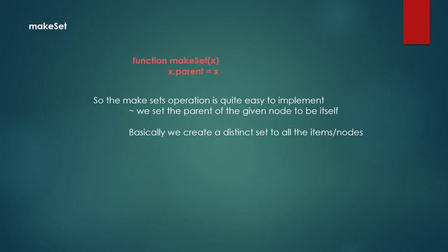The make set operation is very easy to implement. It is going to assign a distinct set to each of the items. We are going to talk about vertices sometimes. Basically, we set the parent to be itself, so we create a distinct set for all the items.